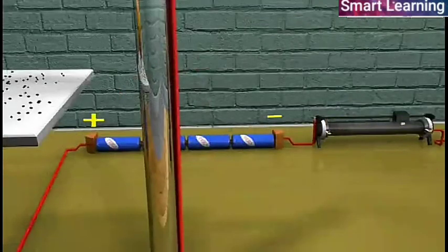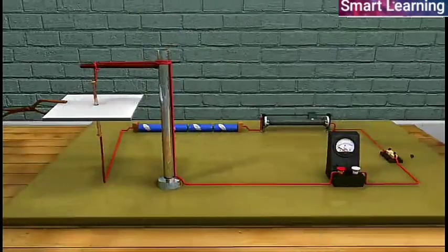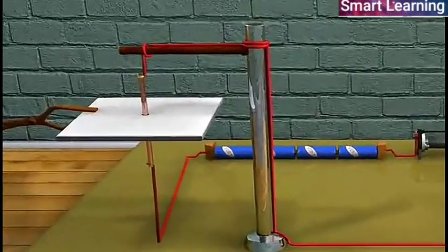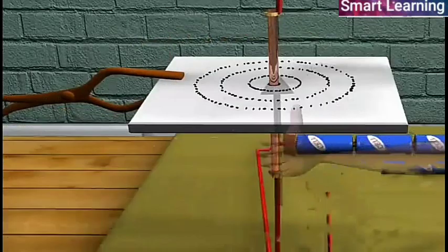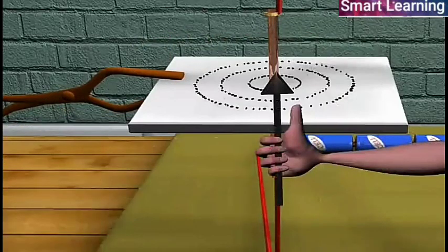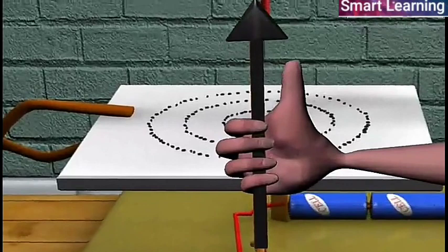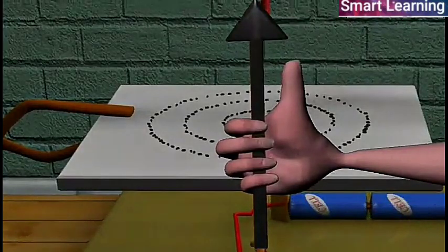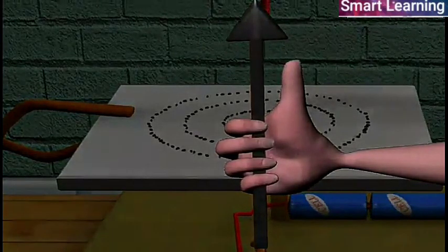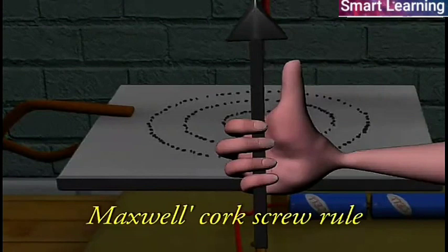If a conductor carrying current is held in the right hand such that the thumb is pointed in the direction of the current, then the direction in which your fingers encircle the wire gives the direction of the magnetic lines of force around the wire. The rule is also called Maxwell's corkscrew rule.